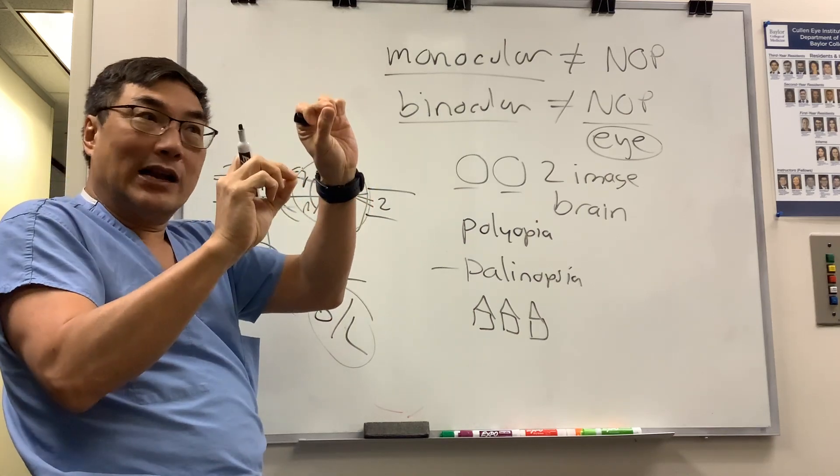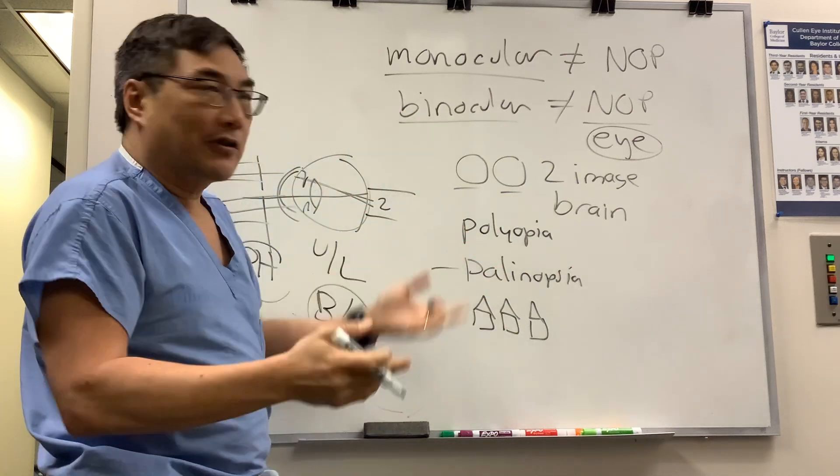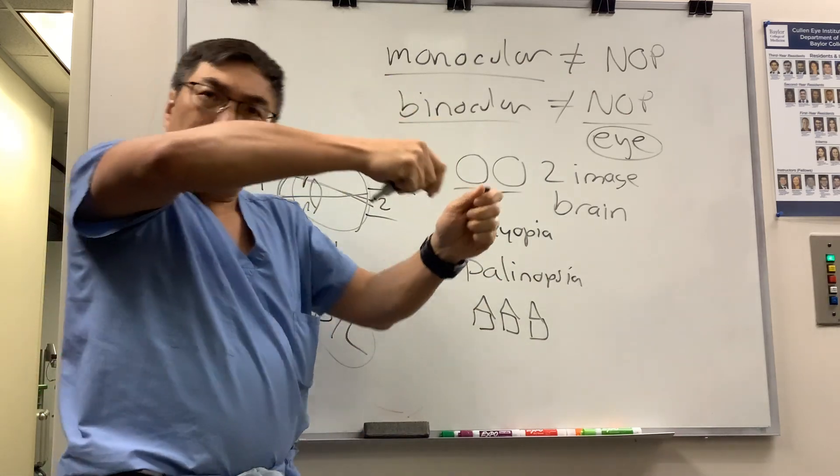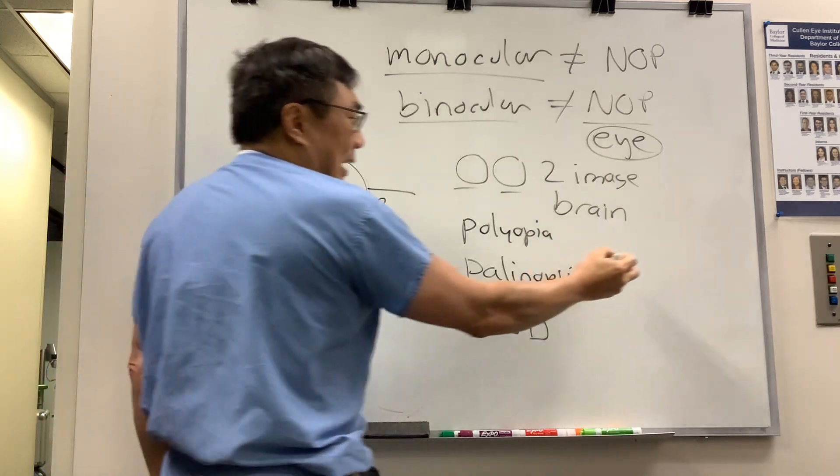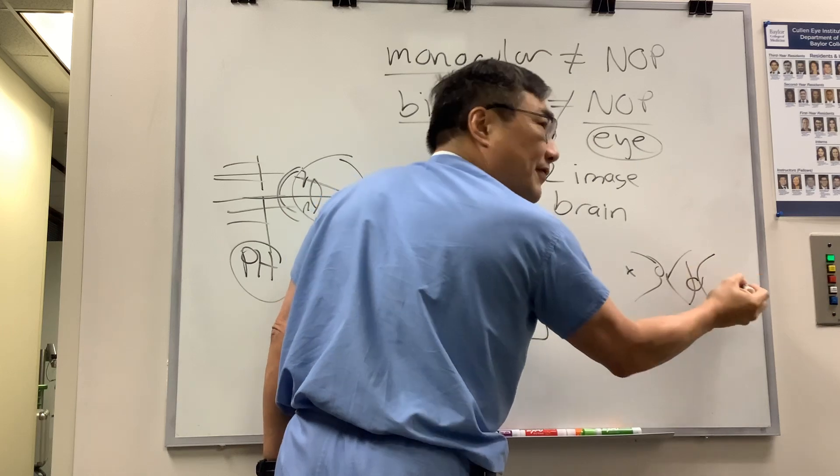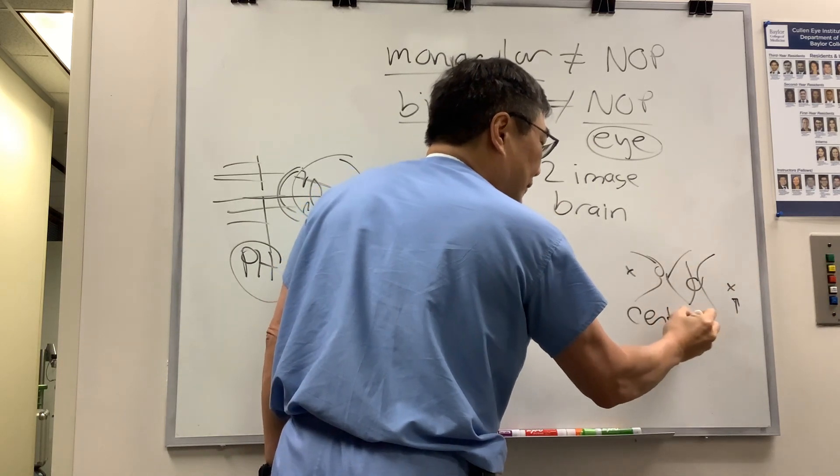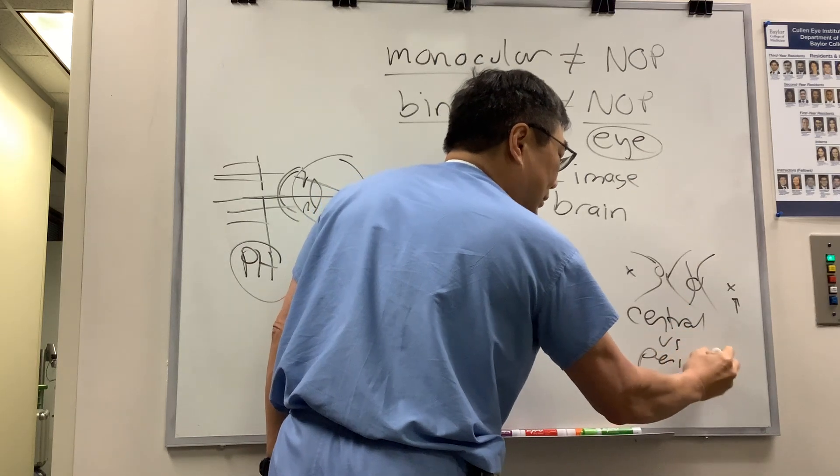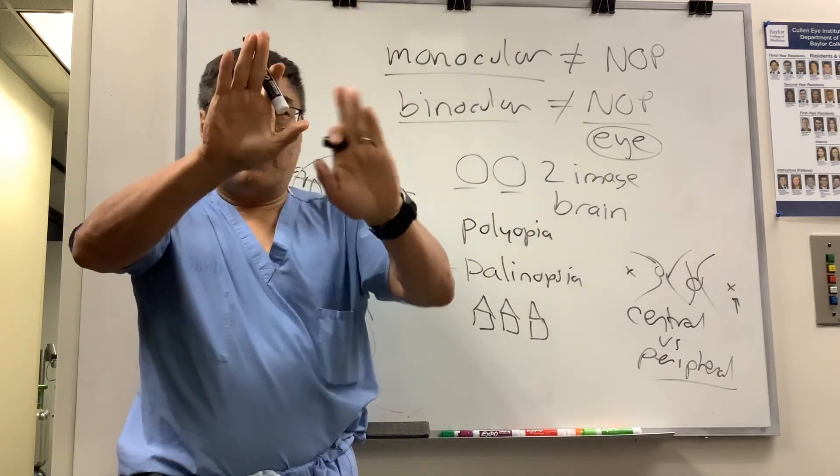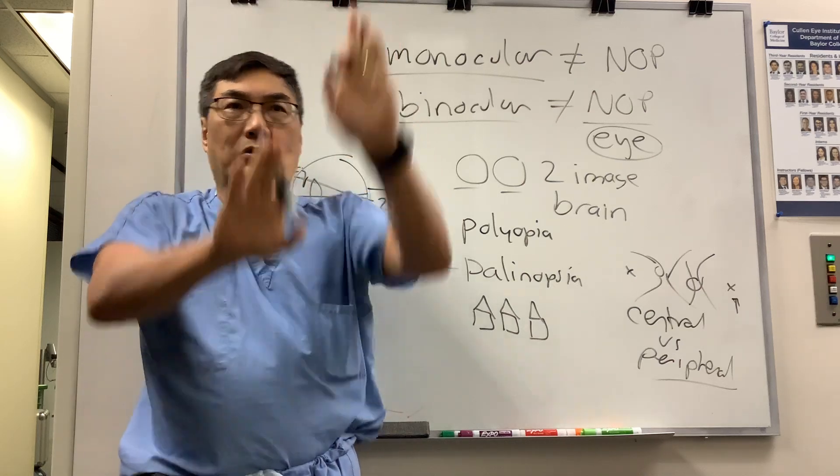Well, what would pull your fovea away? A scar, epiretinal membrane, traction band that pulls the fovea away. So now the fovea in one eye is not aligned with the fovea in the other eye. That's going to cause central versus peripheral rivalry. What that means is if your two foveas aren't aligned on the target, even if your periphery is aligned, your center won't be aligned. And then you won't be able to fuse the image.